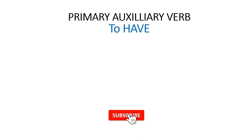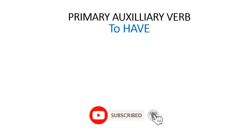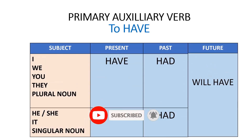'To have' forms — how can they be used? For I, we, you, they, and plural nouns: present tense uses 'have', past tense 'had', future tense 'will have'. For he, she, it, and singular nouns: present tense uses 'has', past tense 'had', future tense 'will have'.